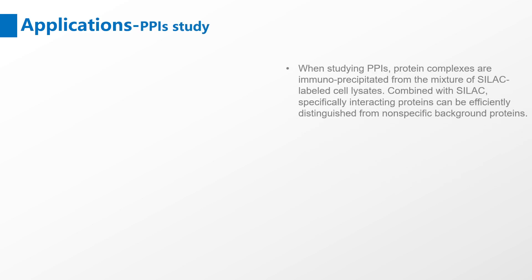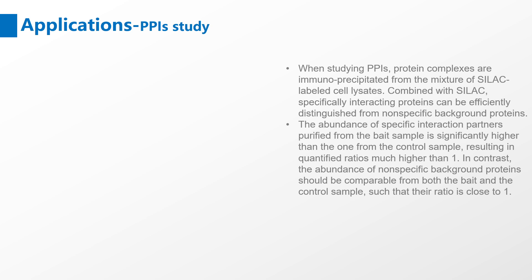When studying protein-protein interactions, protein complexes are immunoprecipitated from the mixture of SILAC labeled cell lysates. Combined with SILAC, specifically interacting proteins can be efficiently distinguished from non-specific background proteins. The abundance of specific interaction partners purified from the bait sample is significantly higher than the one from the control sample, resulting in quantified ratios much higher than one. In contrast, the abundance of non-specific background proteins should be comparable from both the bait and the control sample, such that their ratio is close to 1.